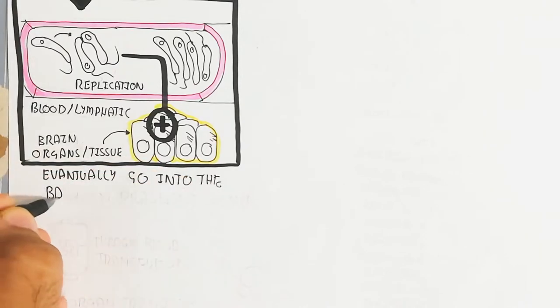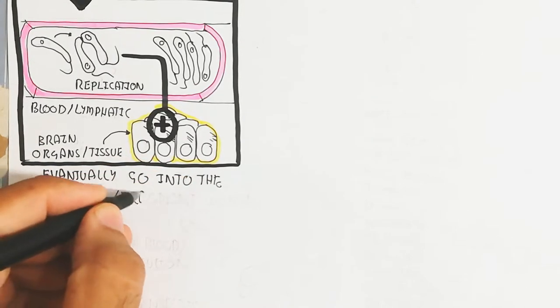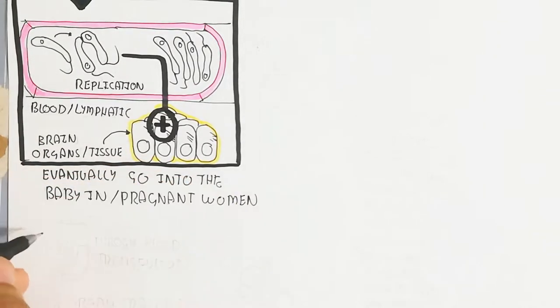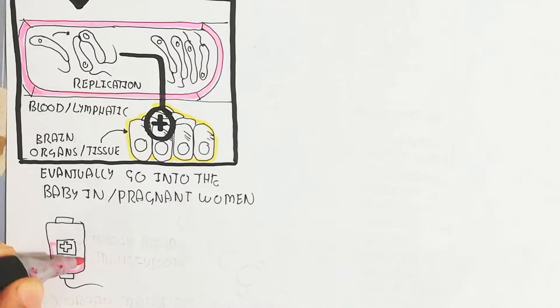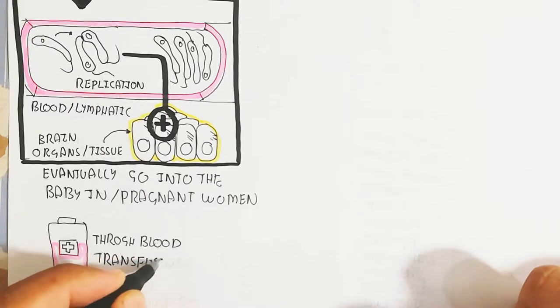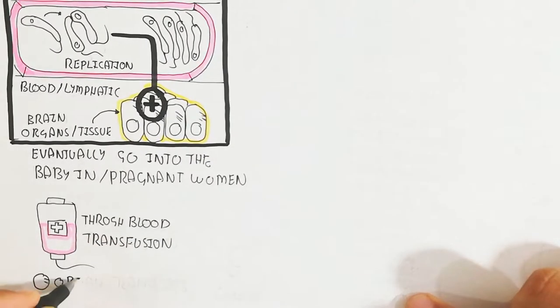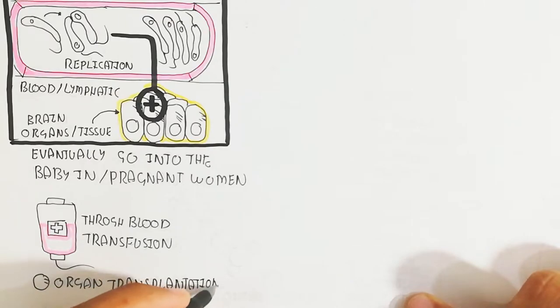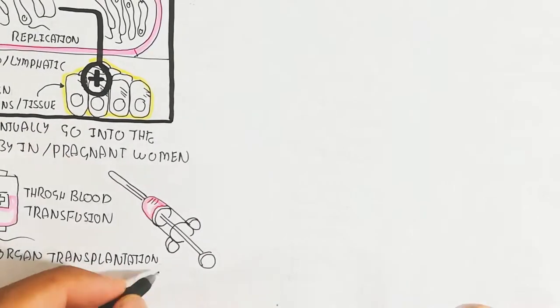It grows in the blood and lymphatic system and can eventually spread to the baby in pregnant women. It can also be transmitted through blood transfusion, organ transplantation, and contaminated syringes.